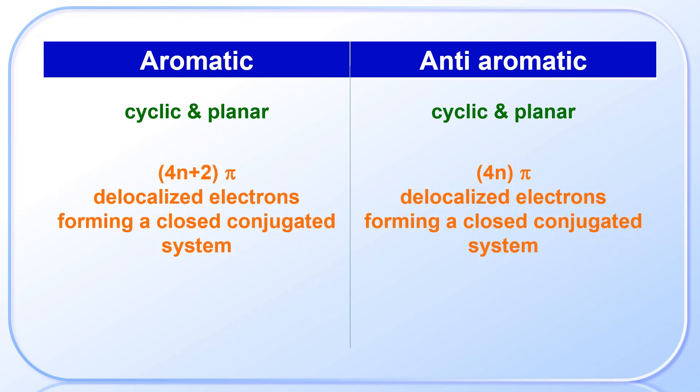Let us now compare aromatic compounds with anti-aromatic compounds. Both are cyclic and planar. But in aromatic compounds, there are 4N+2 pi-electrons which are delocalized, forming a closed conjugated system. In case of anti-aromatic compounds, there are only 4N pi-delocalized electrons forming a closed conjugated system. In both cases, closed conjugated systems are formed because of delocalization of electrons in a cyclic loop.